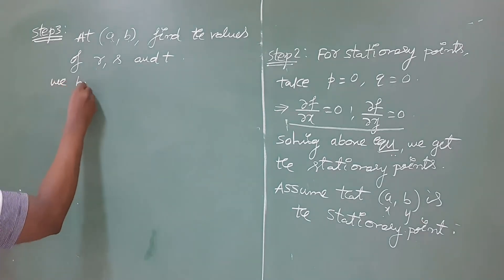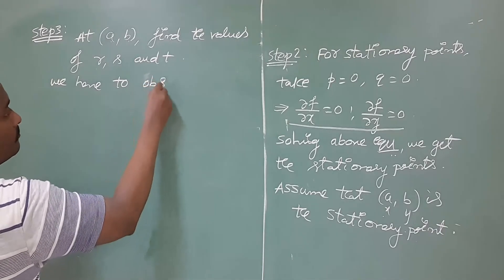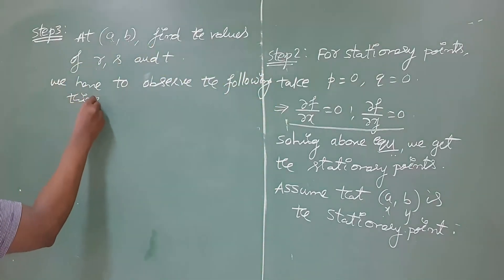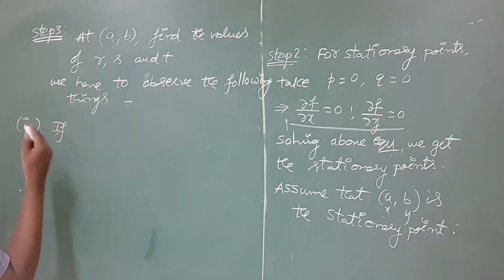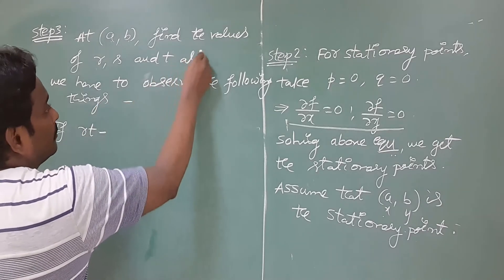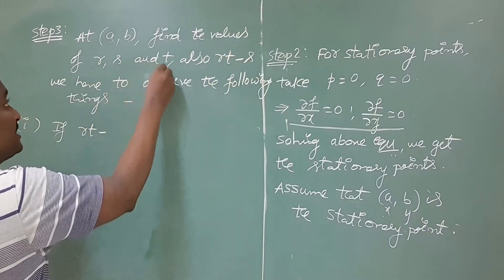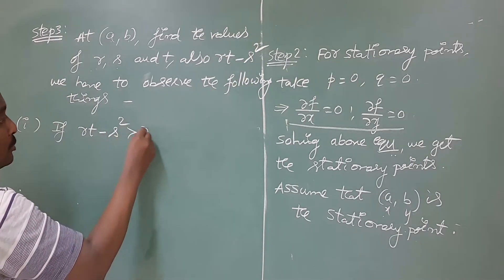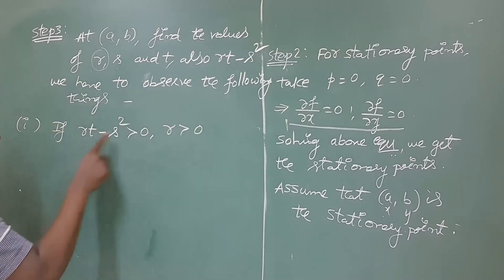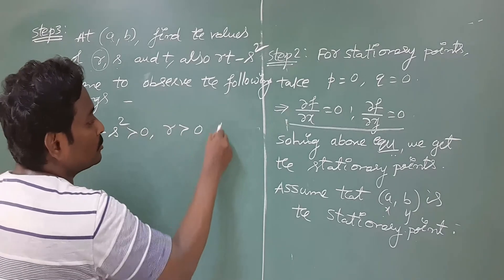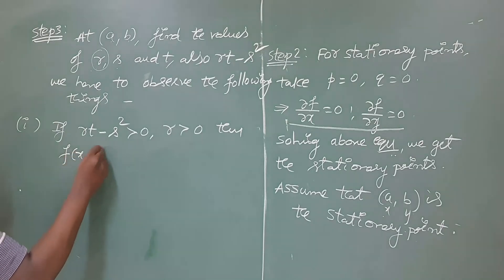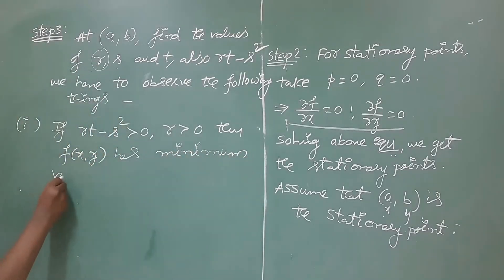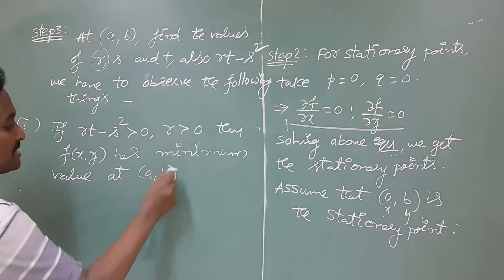After that, observe the following. We also calculate RT − S². If RT − S² is positive and the value of R is also positive, then the function f of x comma y has a minimum value at the stationary point (a, b).